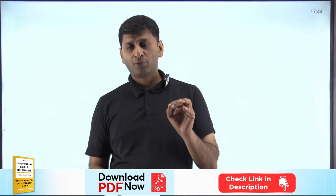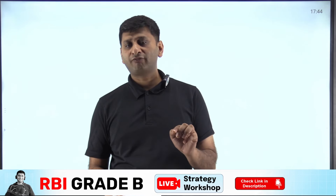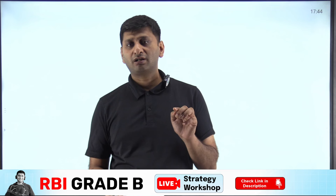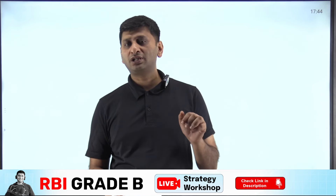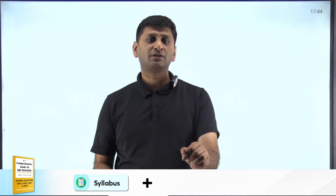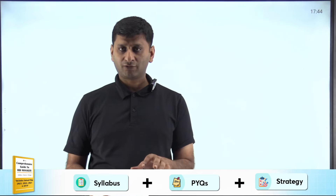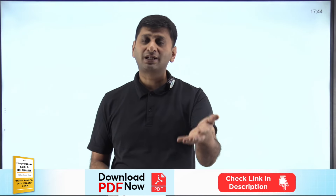Besides that, there are reports — I will tell you 5 key reports you must read before the exam: first, RBI Annual Report; second, Currency and Finance Report; third, Financial Stability Report; fourth, Report on Trends and Progress in the Banking Industry. And your standard documents — fifth and sixth — Union Budget and Economic Survey. These six documents you must read; objective questions can come from them, and they are essential for descriptive as well.